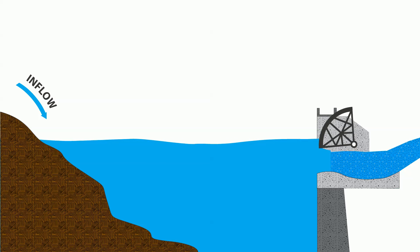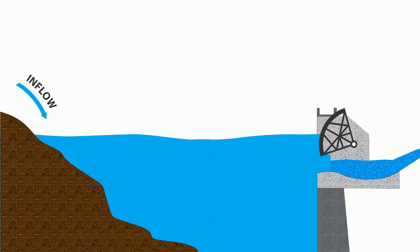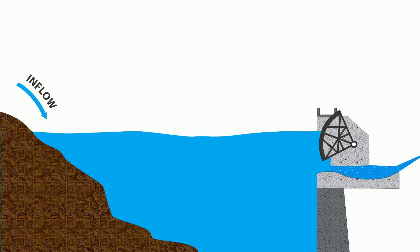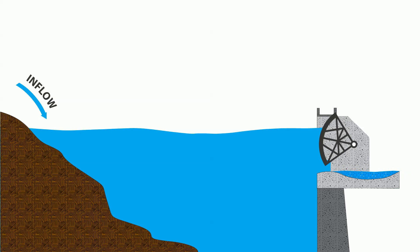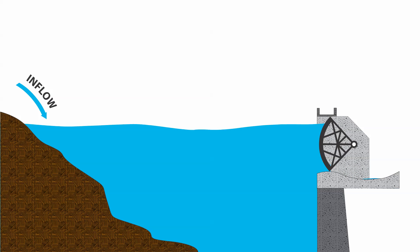After most of the inflow from a flood event has been bypassed at the dam, the spillway gates are gradually closed to store the remaining small inflows behind the dam.